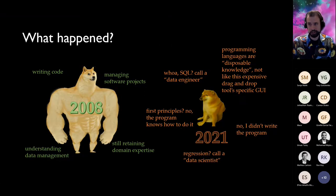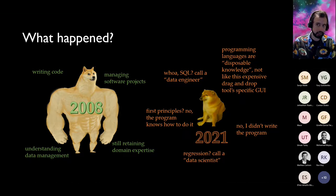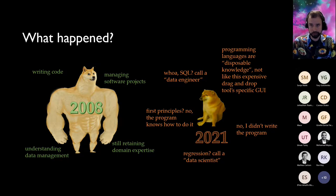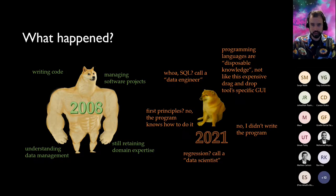So what the heck happened? When you compare 2008 to 2021, why did the expectations drop so drastically for a petroleum engineer engaged in digital technology? The digital engineer we envisioned in 2008 might be writing code, certainly managing software projects — whether custom in-house development or liaising with a vendor — understanding data management while retaining domain expertise in completions, reservoir engineering, or drilling. Whereas by 2021, the expectation appears to be: SQL? Call a data engineer. I'm an engineer, I don't write code. Regression? Call a data scientist. And why understand first principles? The program knows how to do it.